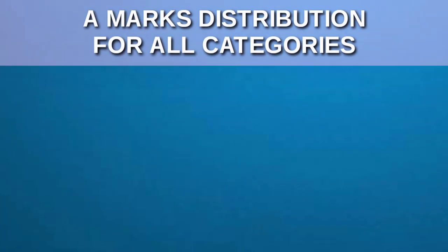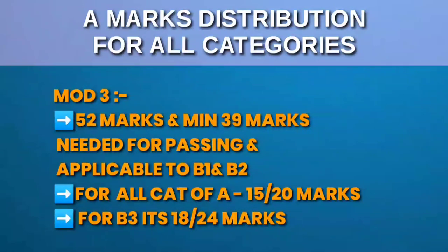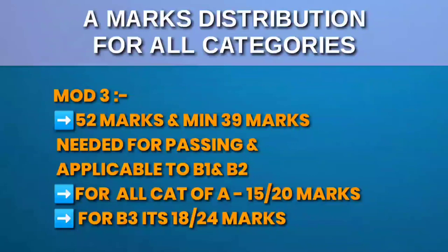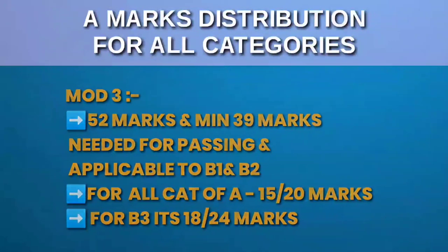Now let's understand the marks distribution for all categories. Module 3 is of 52 marks and you need 39 marks for passing, applicable for category B1 and B2. For all categories of A, it's 20 marks and you need 15 marks. While for B3, it's 24 marks and the passing mark is 18.